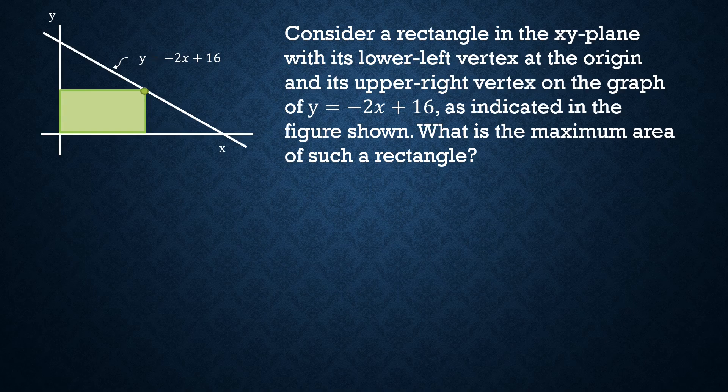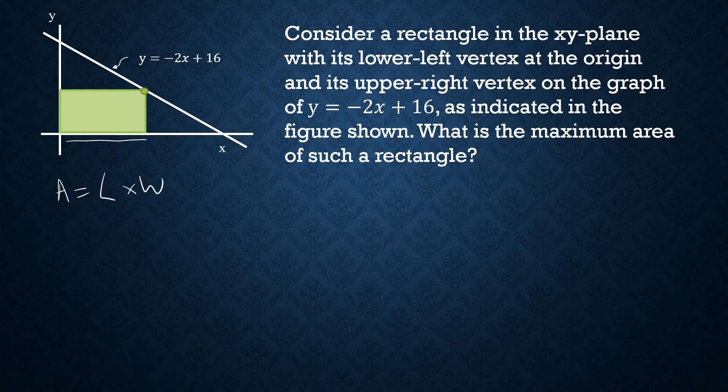Let's look at the rectangle. Area of a rectangle is length times width. Here, the length would be equal to x, and its width would be whatever y value it is on this line, so it'll be equal to negative 2x plus 16.